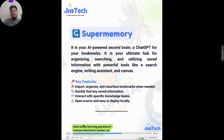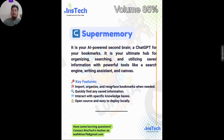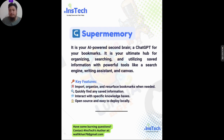The next one is Super Memory — a relatively older tool launched about six to nine months ago. It is like a second brain for your bookmarks, described as a ChatGPT for bookmarks. It's AI-powered and used for organizing, searching, and utilizing saved information with tools like a search engine, writing assistant, and canvas. You can import, organize, and resurface bookmarks whenever you need them, and it is open source and easy to deploy locally.